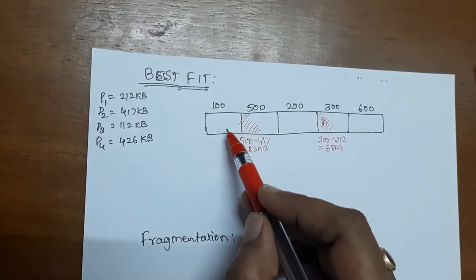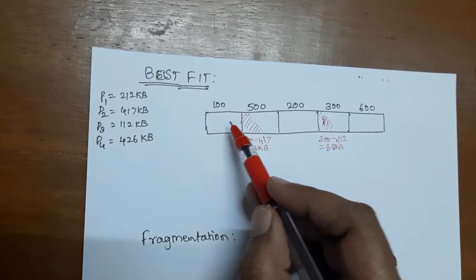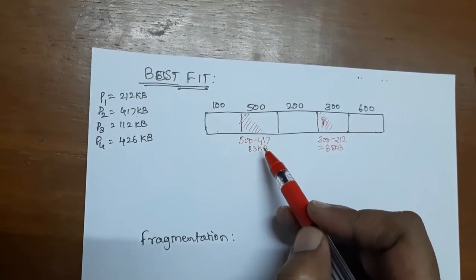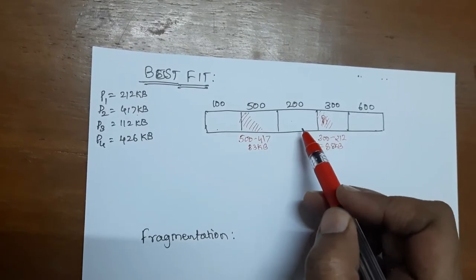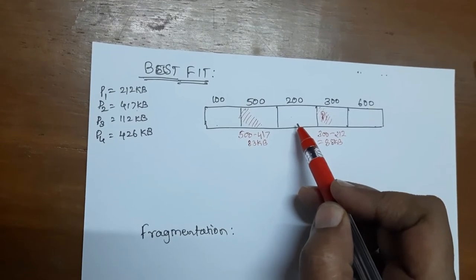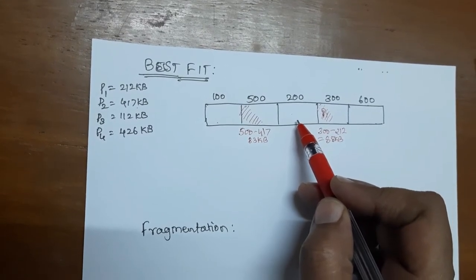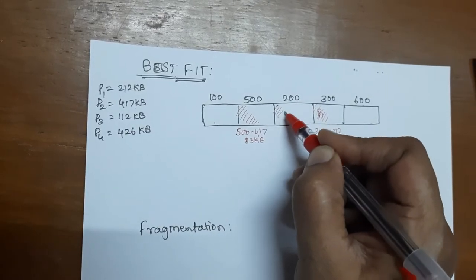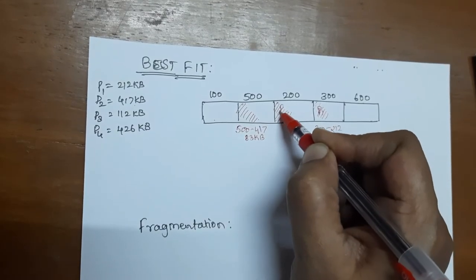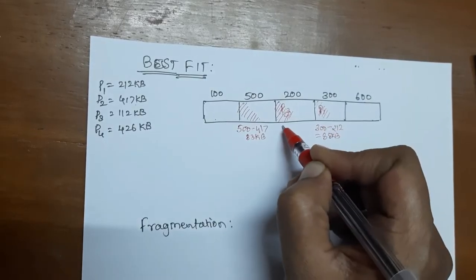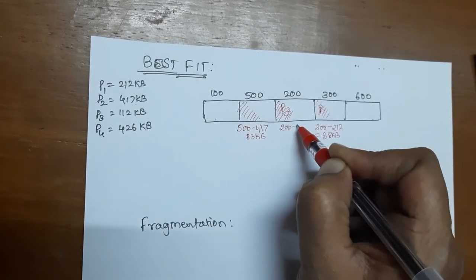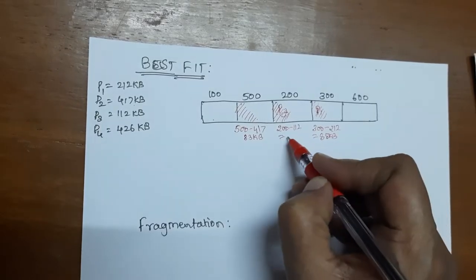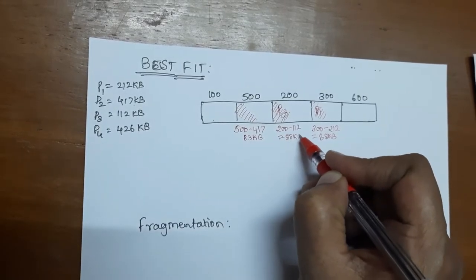The next incoming process is P3 of size 112 KB. This is greater than the first partition. The second partition is already allocated with P2. It goes to the third partition of size 200 KB, which is just big enough to hold P3. So P3 is allocated with this block, creating a small hole of 200 minus 112, equal to 88 KB.